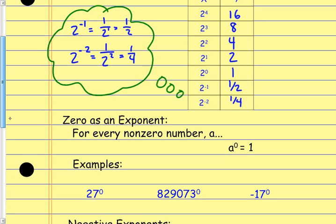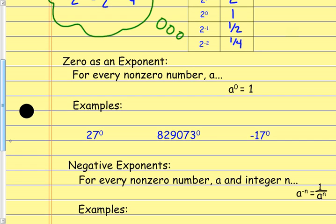If we look at these rules, the first one is zero as an exponent. Anytime we have a non-zero number raised to a zero power, it's going to equal 1. So if we have a number a to the zero power, it equals 1. For example, 27 to the zero power — 27 is a non-zero number, so that's going to equal 1.